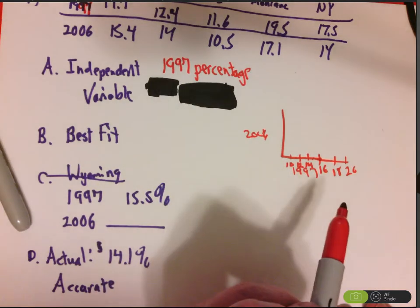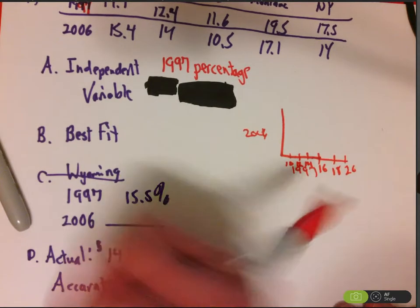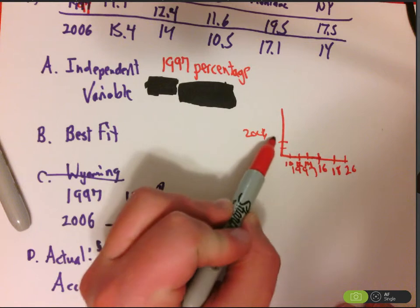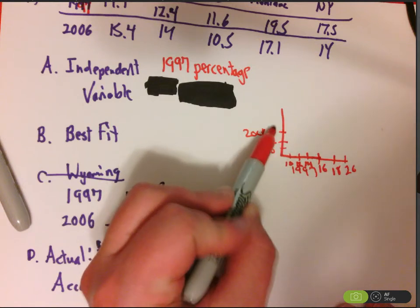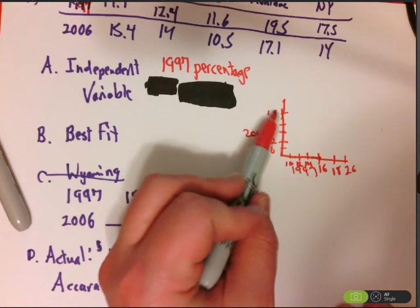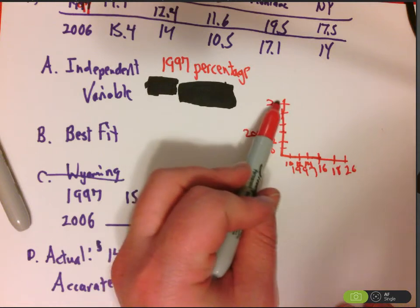For my 2006 data, I'm going to do the same scale because it's pretty similar. 10, 12, 14, 16, 18, and 20.